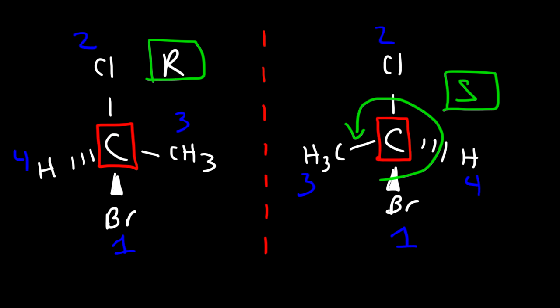If you have a molecule with two chiral centers, to draw the enantiomer simply reverse both chiral centers' configurations, and make sure that the molecule doesn't have a line of symmetry — otherwise it could be a meso compound.